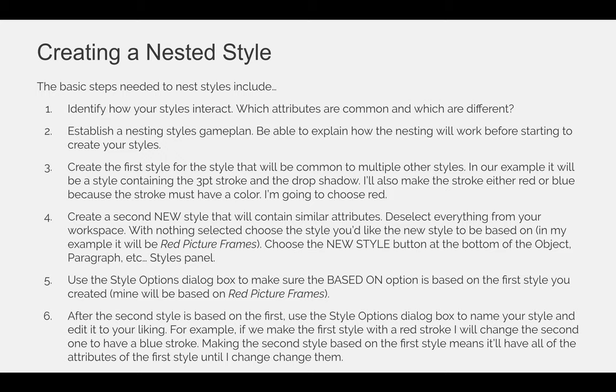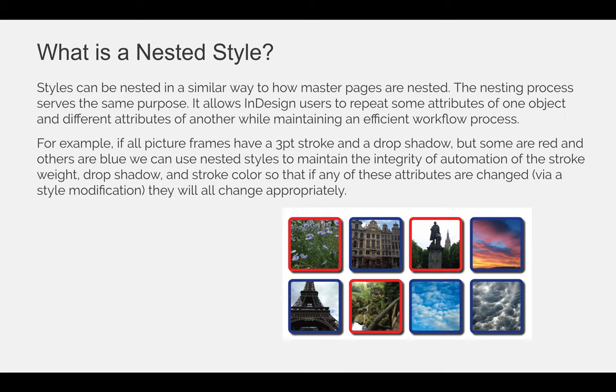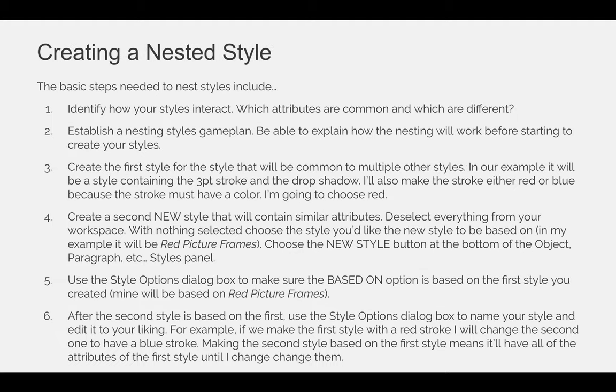The basic steps needed to nest styles are: First, identify how your styles will interact — which attributes are common and which are different. So in our example, the stroke thickness, the stroke type, the rounded corners, and the drop shadow are all the same. The only thing that's different is the color. Second, establish a nesting styles game plan — be able to explain how the nesting will work before starting to create your styles. Third, create the first style for the style that will be common to multiple other styles. In our example, it will be a style containing the three-point stroke and the drop shadow.